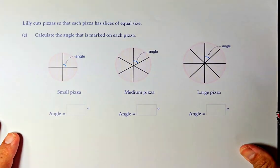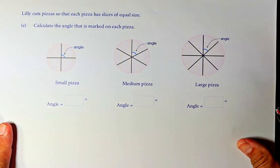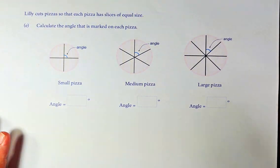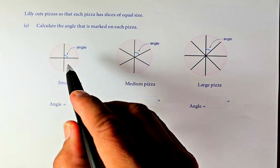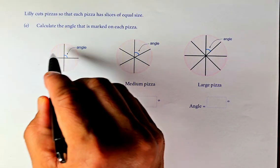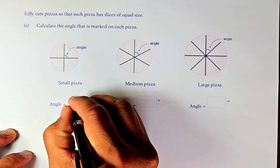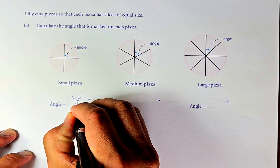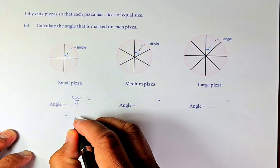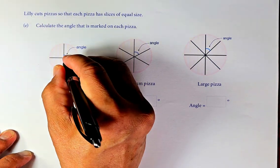Okay, 1E sounds like this. So I'm going to get the paper, the question. Okay, so 1E is going to look like this. Okay, we shall read the question. Lily cuts pizza so that each pizza has slices of equal size. Calculate the angle marked on each pizza. Okay, so you know the angle around the point. The whole angle is going to be 360. If you divide it into 4, so it's going to be 360 divided by 4. And the angle is going to be 90 degrees. So that angle is going to be 90 degrees.